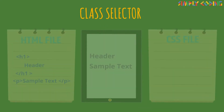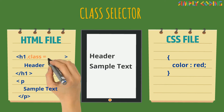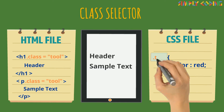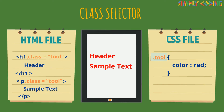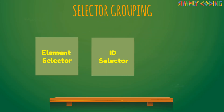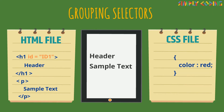Next is the class selector, which selects elements with a specific class attribute. Here we write a period or dot character followed by the name of the class. These selectors — such as element, ID, and class — can be grouped or applied together as required.